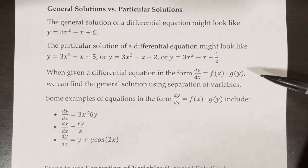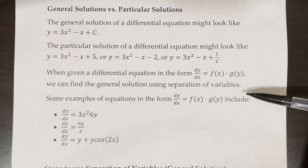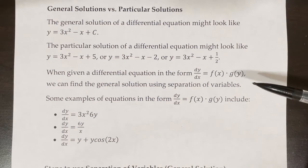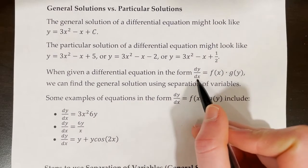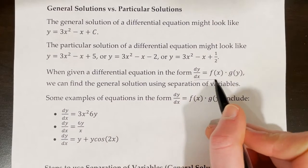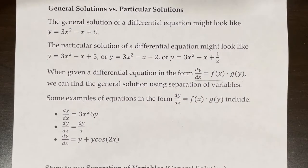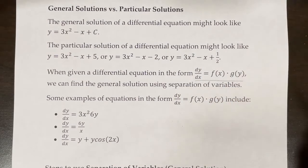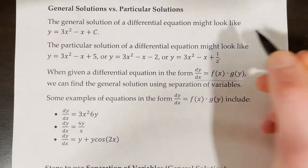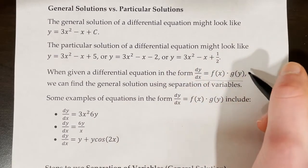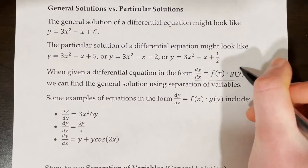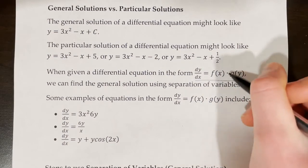When given a differential equation in the form dy/dx equals f(x) times g(y), we can find the general solution using separation of variables. That means our differential equation dy/dx is written in terms of two separate equations — one that includes x and one that includes y — and those are multiplied together.